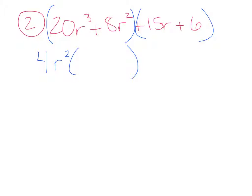So if I divide that, 20 divided by 4 is 5, r³ divided by r² is r, 8 divided by 4 is 2. The r² cancel.